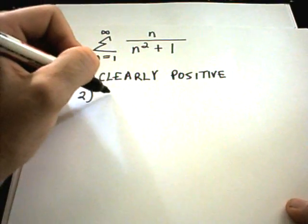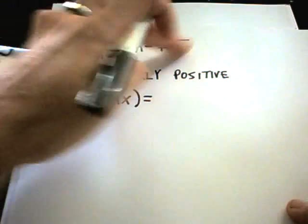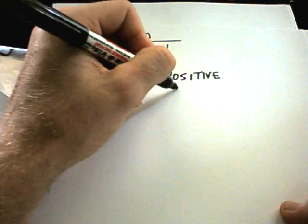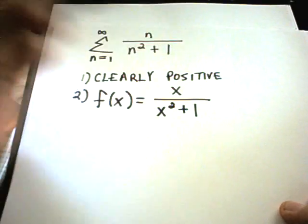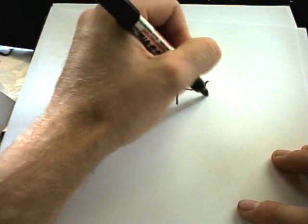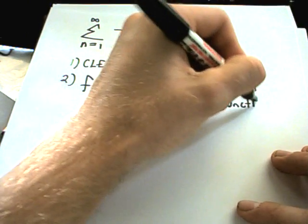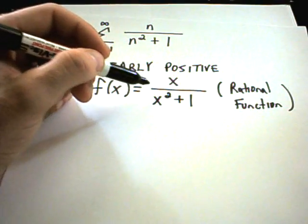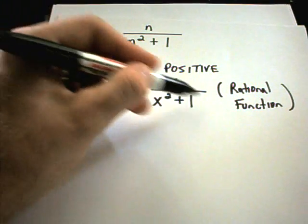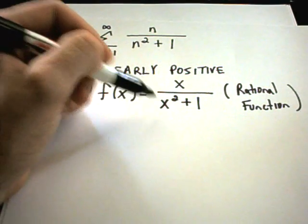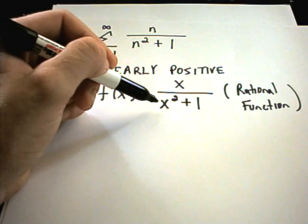It's certainly continuous because I'm going to rewrite the portion of my series, the formula part, and replace n's with x's. So I'm going to rewrite this as x over x squared plus 1. This is just a rational function, and rational functions are continuous on their domain. The only thing that's left out is anything that makes the denominator 0, but there's nothing that's going to make the denominator 0, so it's certainly continuous everywhere.